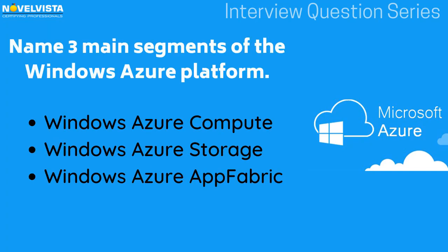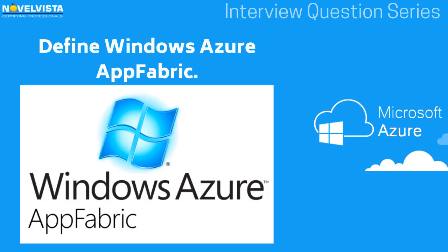Name three main segments of the Windows Azure platform. The first is Windows Azure Compute, the second is Windows Azure Storage, and the third is Windows Azure App Fabric. Define Windows Azure App Fabric: with the help of Windows Azure Diagnostics, you can gather diagnostic data from an application running in Windows Azure and use it for capacity planning and evaluation. This process is called Windows Azure App Fabric.